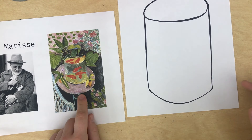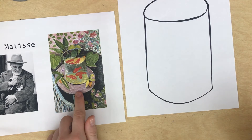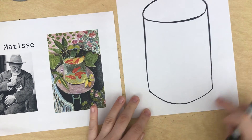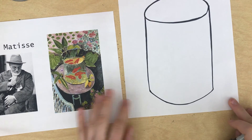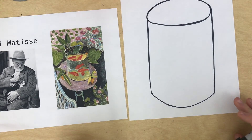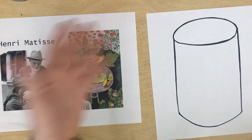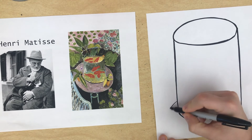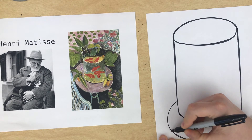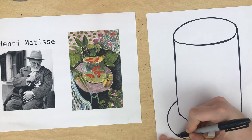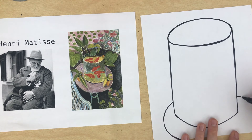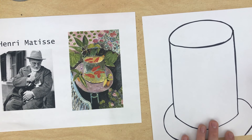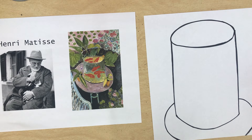Now let's do the table. If you don't want to do this part, that's okay — it's just background and it's blank, and I really want to fill it up with some fun stuff. So I'm going to make the table like Matisse does in his painting. I do this by making a line on one side and the same line on the other side. Beautiful work, my friends.